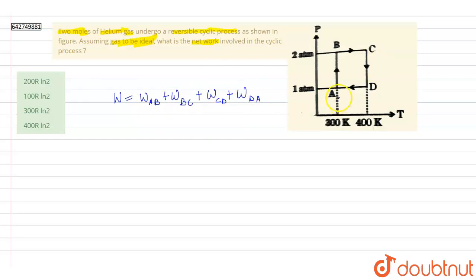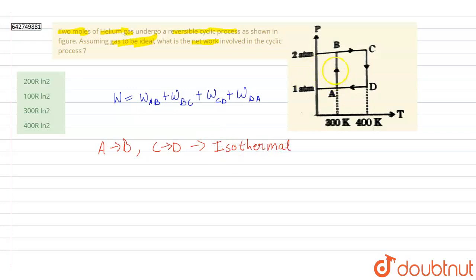From A to B, the temperature is constant and only the pressure is increasing — this is an isothermal process. Similarly, C to D is isothermal. From B to C and from D to A, the pressure is constant, making these isobaric processes.